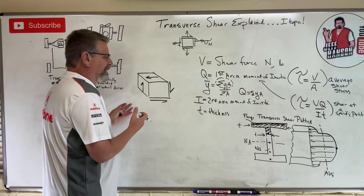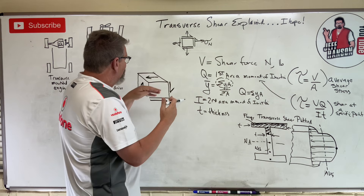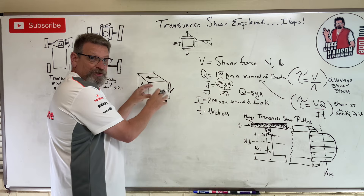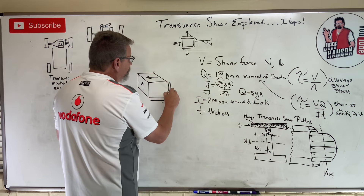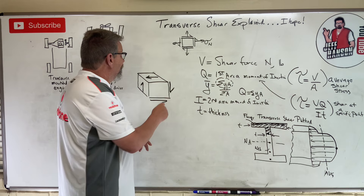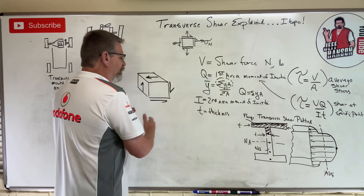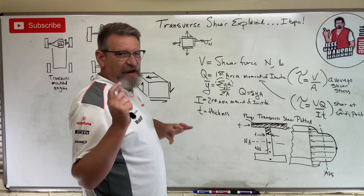The transverse shear equals the shear on the perpendicular face — they have to be the same value. For a little volume element cube, the shear on one surface must be matched by an equal and opposite shear on the other surface because of Newton's third law. If you sum the torques on that cube, it would be spinning if that weren't the case. That's the best way I can describe what transverse shear is.